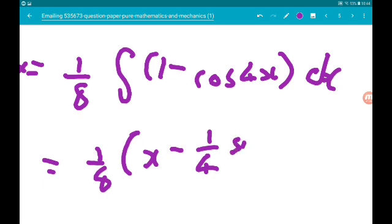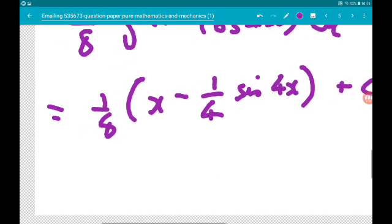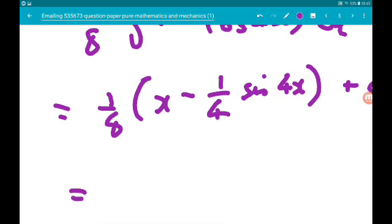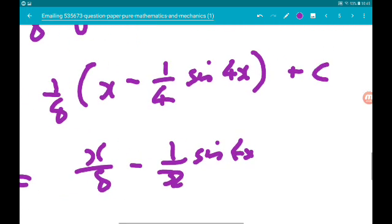sine of 4x add c. So we've got x over 8 minus sine of 4x over 32, so minus 1 over 32 sine of 4x add c.